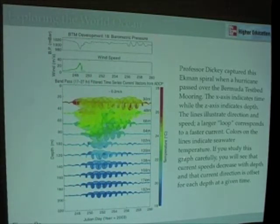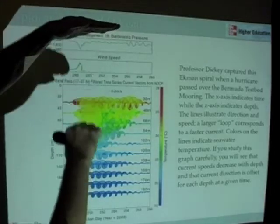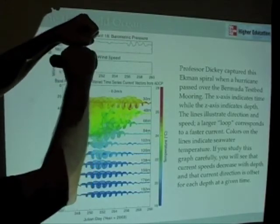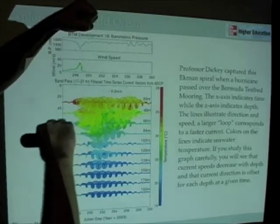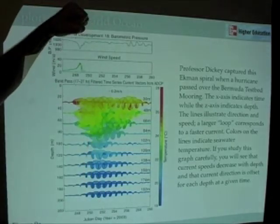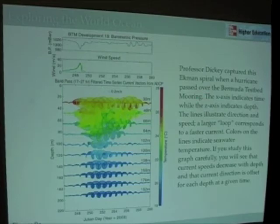This is an image that Tommy Dickey got, I believe in 2003, from the Bermuda Testbed Mooring. It is a moored set of instruments with a float at the surface, a cable that runs all the way down to the seafloor, and several different instrument packages on that. If you look up Bermuda Testbed Mooring in the book, there's a nice image of it in one of the chapters. This is some data from that.